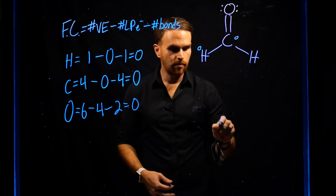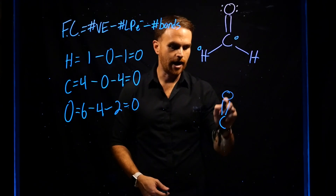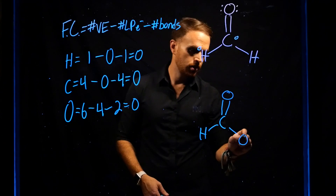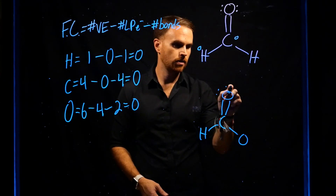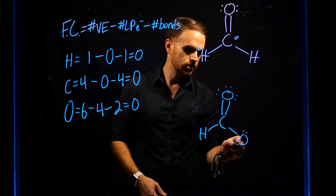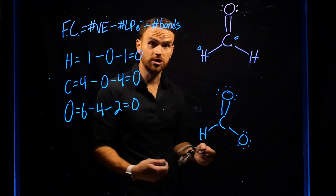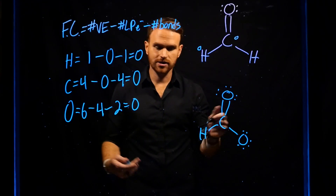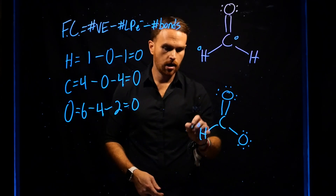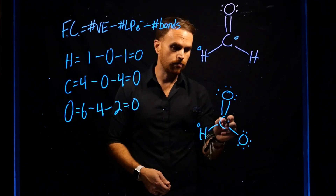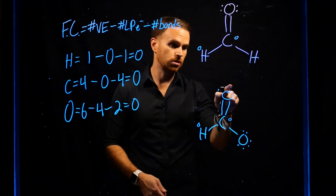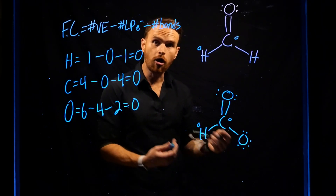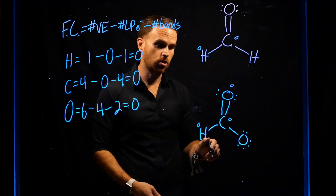An example of a molecule where atoms don't have a formal charge of zero looks something like formate. Similarly, hydrogen would have the same zero formal charge, carbon would have zero, and this oxygen would also have a zero formal charge.